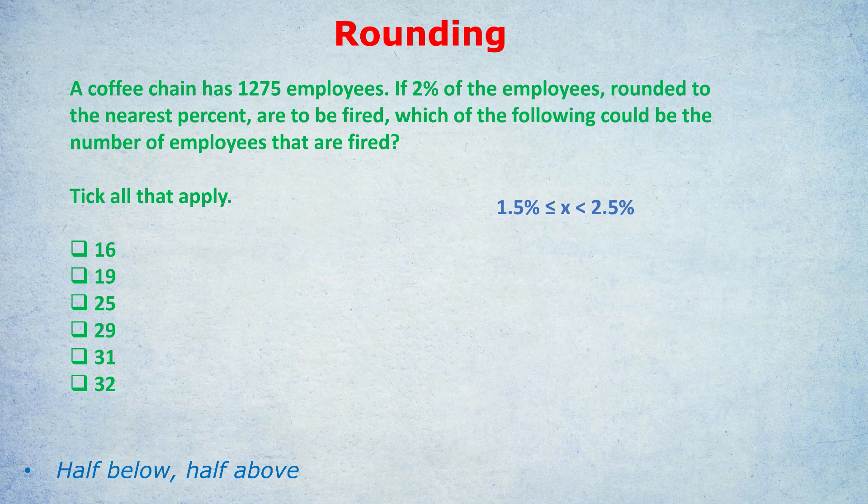So the real percentage of people fired, rounded to 2%, is somewhere between 1.5% and 2.5%. Now we work out what 1.5% of 1,275 is. On a calculator, do 0.015 times the number — that gives us 19.125. This is the lower bound, 19.1, meaning it couldn't have been 19 employees. The minimum possible was 19.1, so 19 or lower is not allowed.